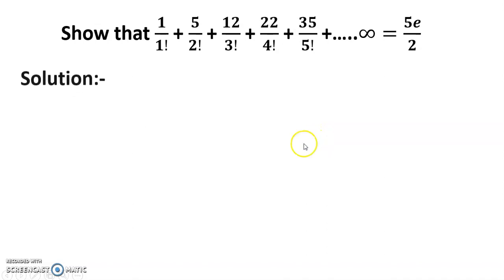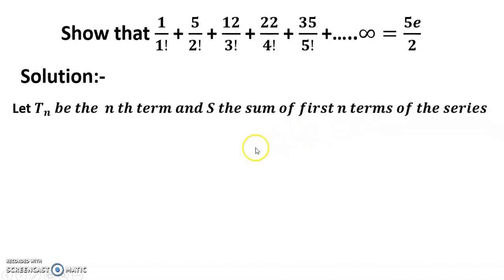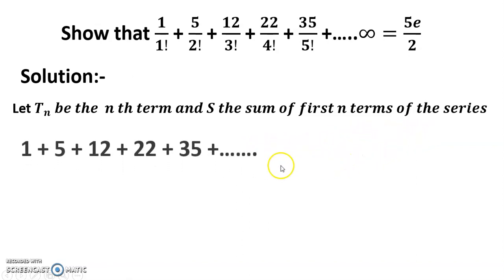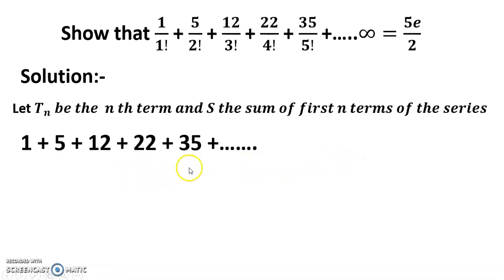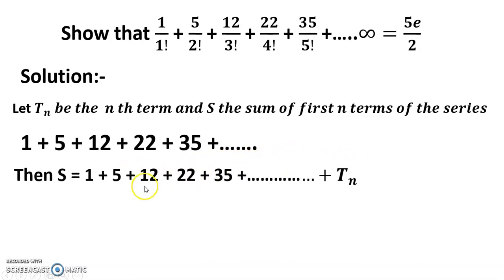So friends, let Tn be the nth term and S the sum of the first n terms of the series 1 + 5 + 12 + 22 + 35 + ... up to infinity. It can then be written that S equals the sum up to plus Tn.